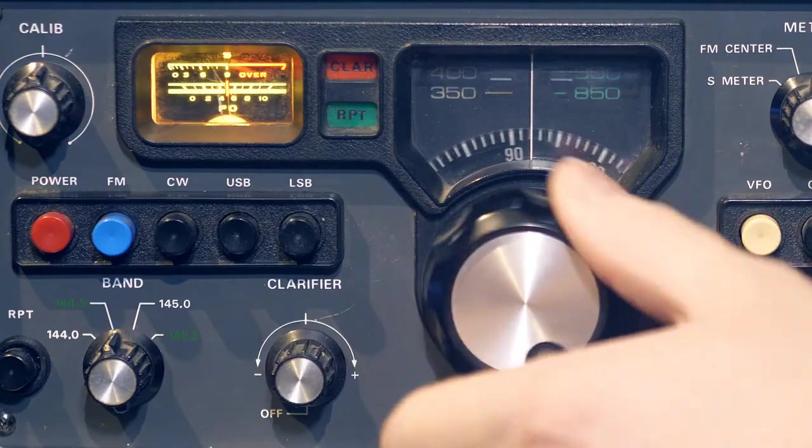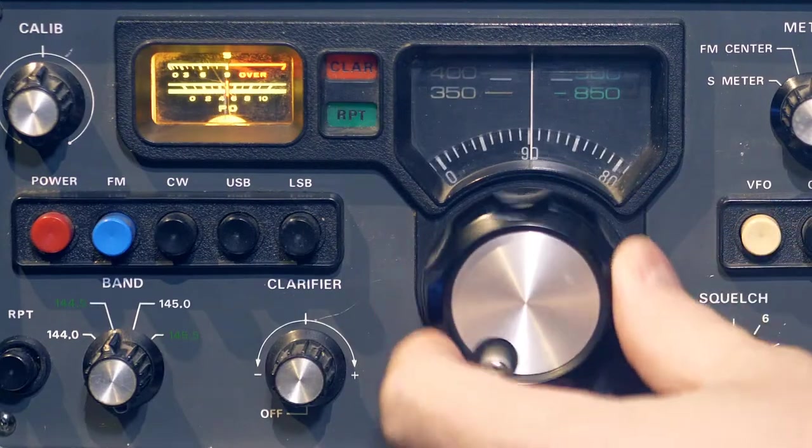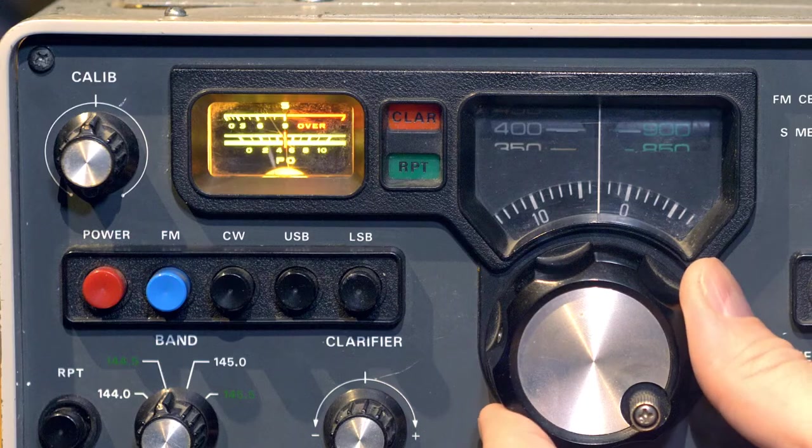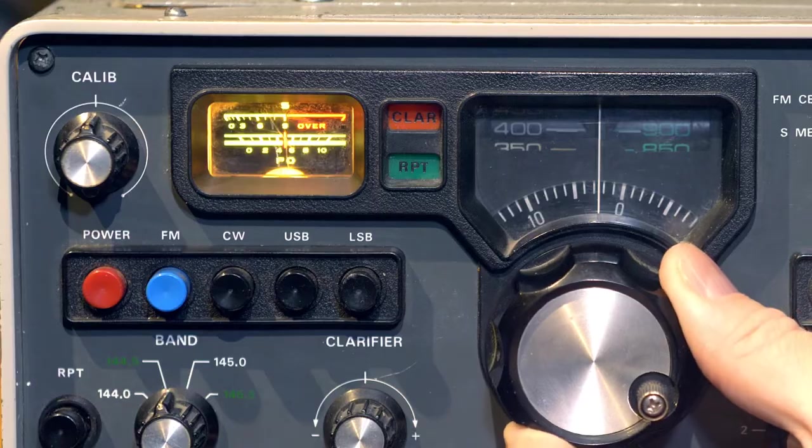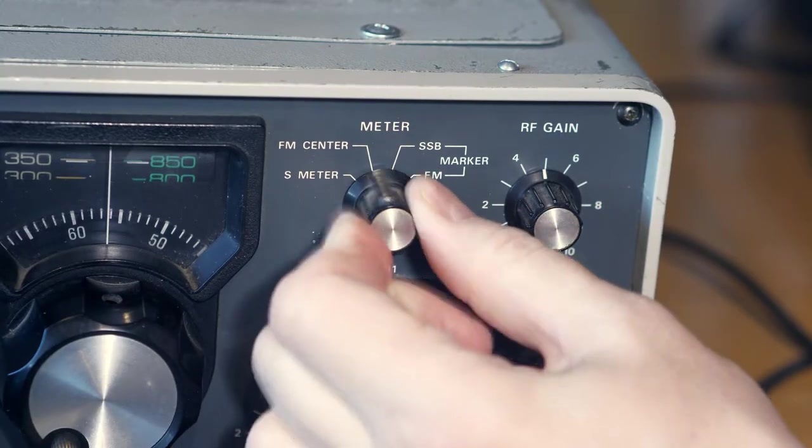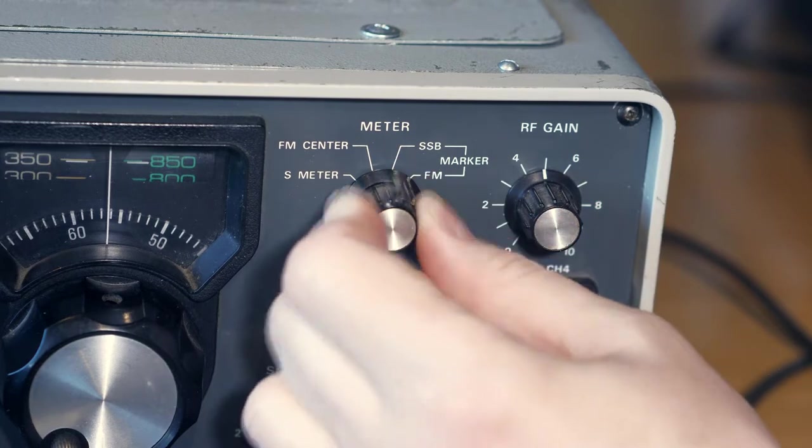Since this transceiver has a variable frequency oscillator, a quartz calibrator that outputs a signal every 100 kHz, you can check the accuracy of the scale adjustment using this quartz calibrator. The operating mode of the pointer indicator is switched by a 4 position switch. And also this switch turns on the quartz calibrator.